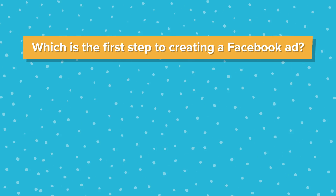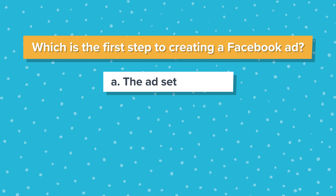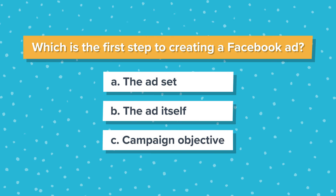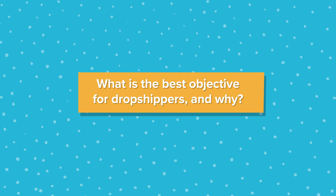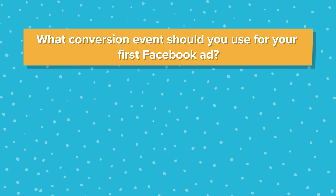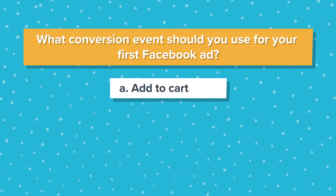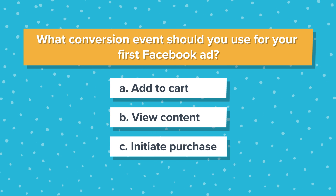If you've been following along, you should have your Facebook Pixel installed and the ads campaign objective set to view content. Now it's homework time. I'm going to ask you three questions to see whether you've understood the key points of today's video. Then you can join me for a live Q&A about Facebook ads on Tuesday, April 23rd at 11 a.m. Eastern Standard Time. Question one: What's the first step in creating a Facebook ad? Is it A, creating the ad set; B, creating the ad itself; or C, creating the campaign objective? Question two: What is the best objective for dropshippers and why? Question three: What conversion event should you use for your first Facebook ad? Is it A, add to cart; B, view content; or C, initiate purchase?